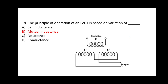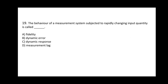In an LVDT there are two secondary windings and one primary winding. Question 19: The behavior of a measurement system subjected to a rapidly changing input quantity is called? Options: A) Fidelity, B) Dynamic error, C) Dynamic response, D) Measurement lag. The correct answer is option C — dynamic response.